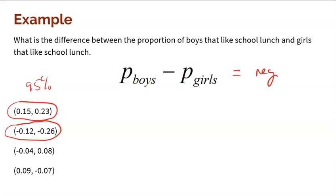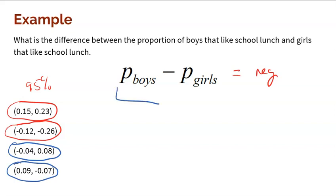A difference like this — where the left side is negative and the right side is positive — tells me that the girls could be 4% more than the boys, or the boys could be 8% more than the girls. The positive 8% means boys are 8% more than the girls; the negative 4% means the girls are 4% more, or equivalently boys are 4% less than the girls. Similarly, if the interval had a positive left and negative right, the interpretation is the same kind of idea: positive means the boy proportion is 9% more, negative means the girl proportion is 7% bigger than the boy proportion.